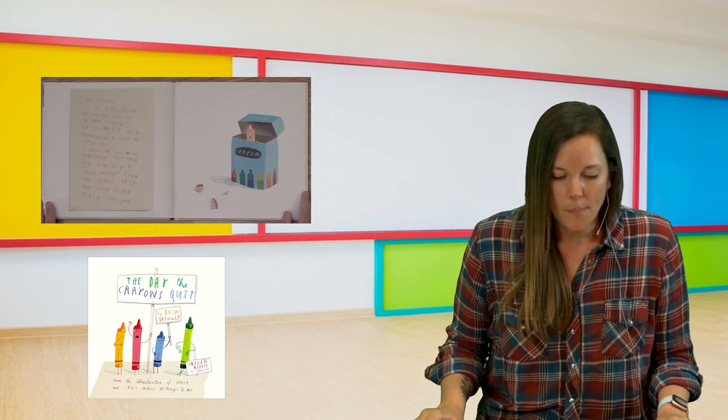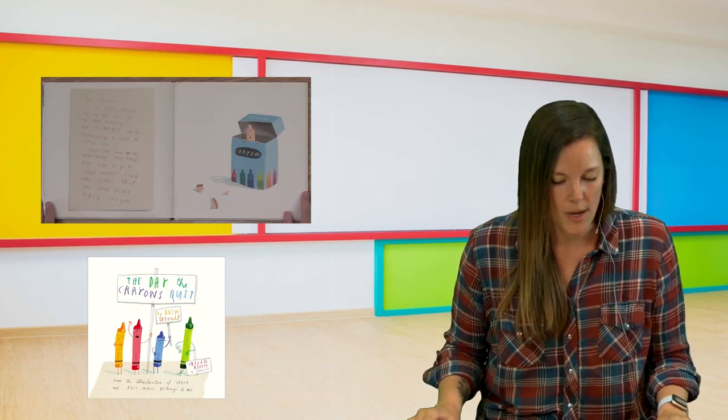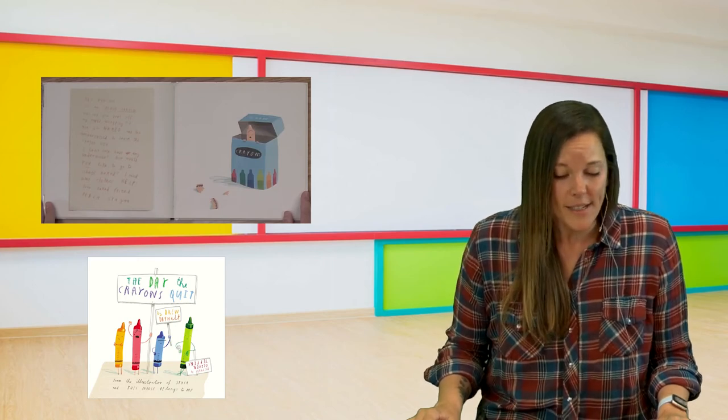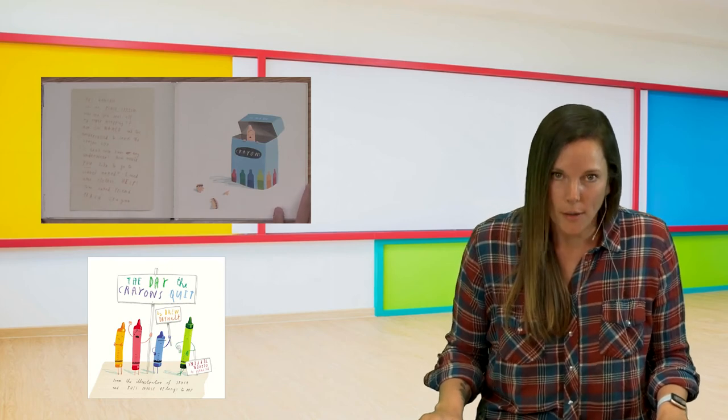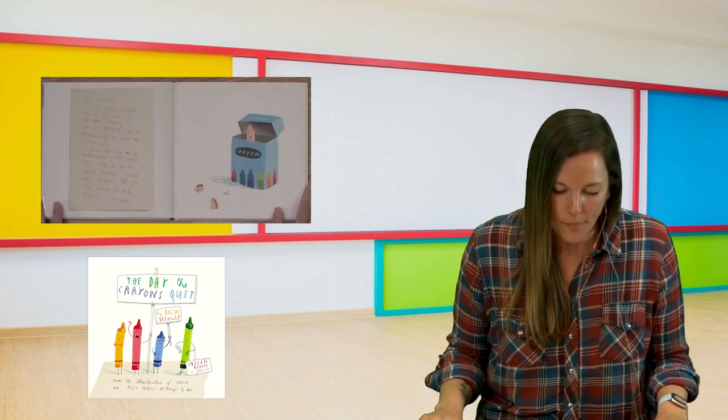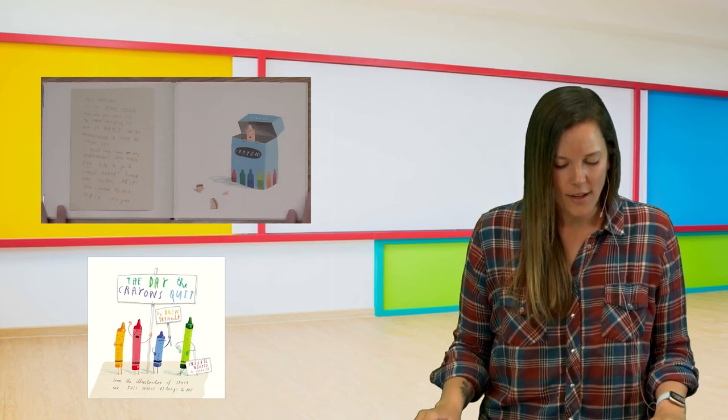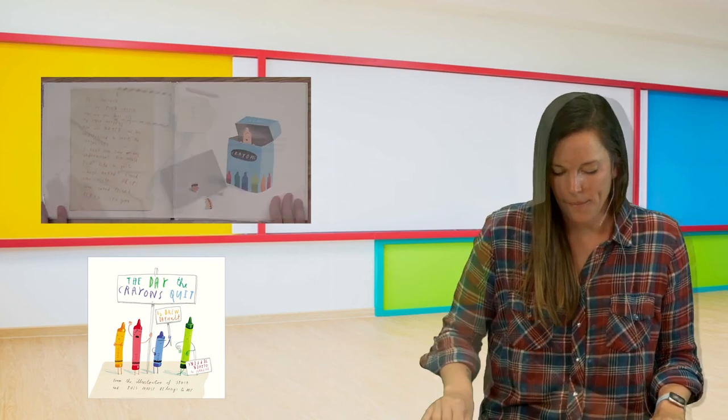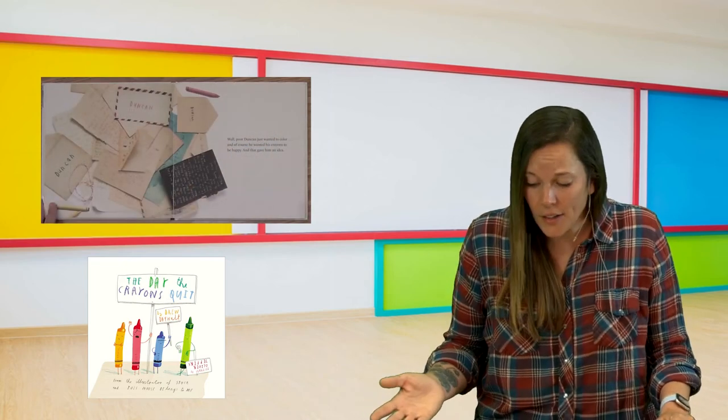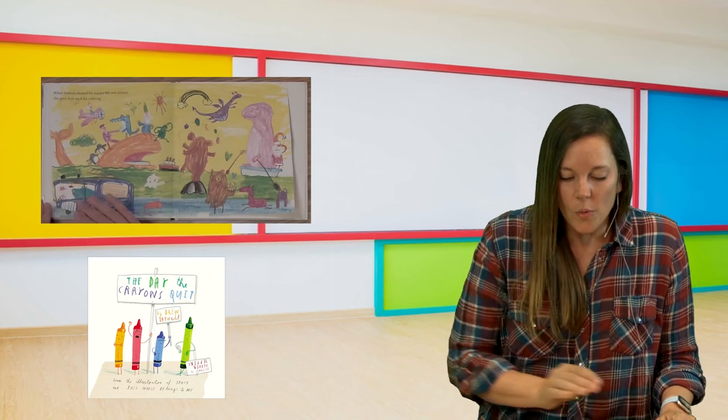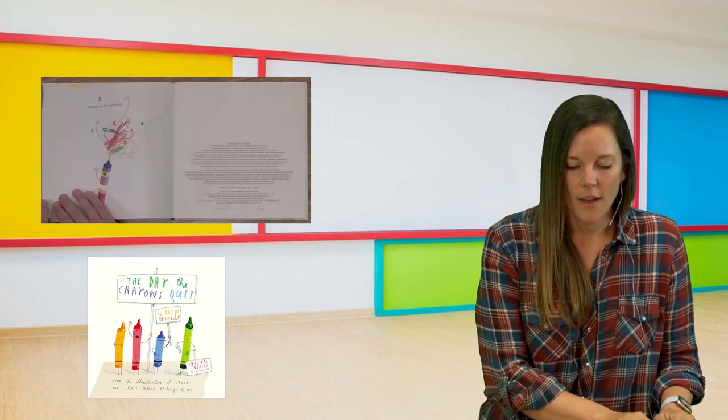Hey, uh, Duncan? It's, uh, me. Peach Cram. Why did you peel off all the paper wrapping? Because now I'm naked, and I'm too embarrassed to leave the crayon box. I don't even have any underwear. How would you like to go to school naked? I need some clothes. Help! Your naked friend, Peach Cram. Well, poor Duncan. He just wanted to color, and of course he wanted his crayons to be happy. And that gave him an idea. When Duncan showed his teacher his new picture, she gave him an A for coloring. And an A plus for creativity. Thanks, guys.